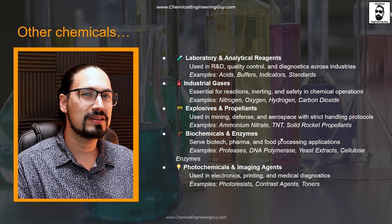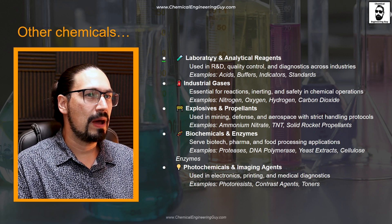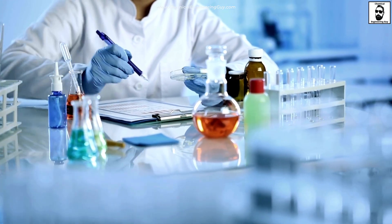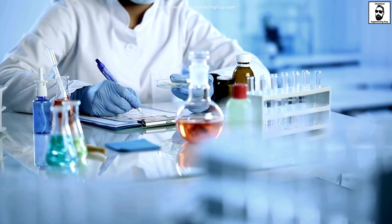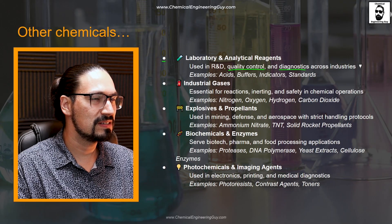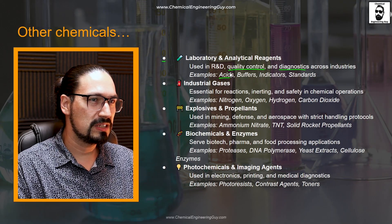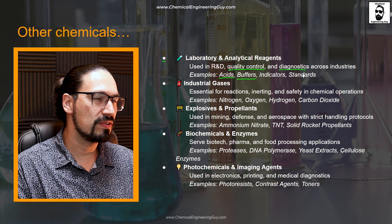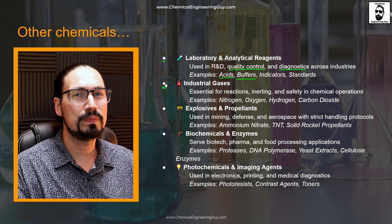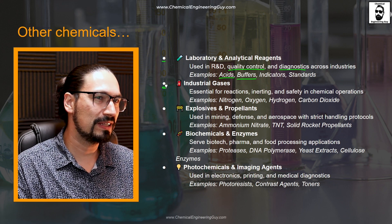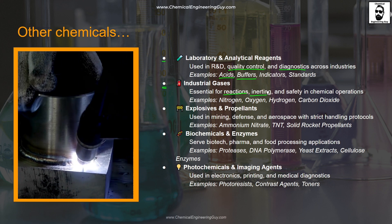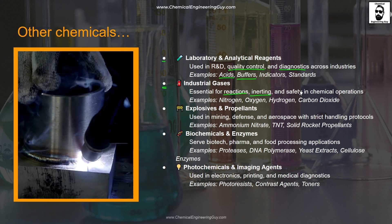First, we have laboratory or analytical reagents, which are used in labs or R&D centers — for quality control, testing, diagnosis, etc. Examples include specific acids, specific buffers, indicators, and standards. Next, we have industrial gases, which could be a unique category by themselves. We're talking about gases used extensively for reactions, inerting, or safety procedures.